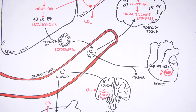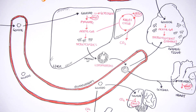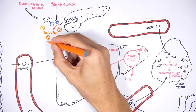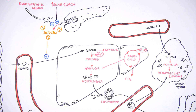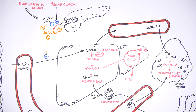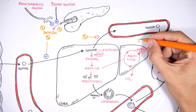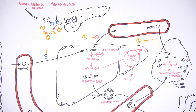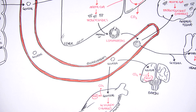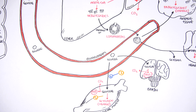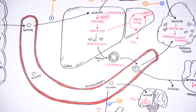Looking at the functions of insulin in the fed state: insulin indirectly stimulates glucose uptake by the liver by inhibiting the secretion of glucose from the liver into the blood. Insulin also stimulates glucose uptake into adipocytes to produce more triglycerides, stimulates glucose uptake into skeletal muscle cells, stimulates glycogen production in both muscle and liver, and stimulates glycolysis in the liver.